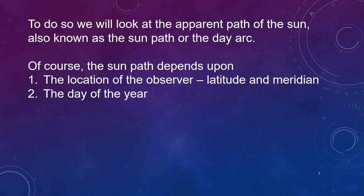So to do so, we're going to look at the apparent path of the sun — that is the pathway that the sun traces out from sunrise to sunset. It's also known as the sun path or the day arc. Of course, the sun path depends upon the location of the observer, i.e. their latitude and meridian, and the particular day of the year.